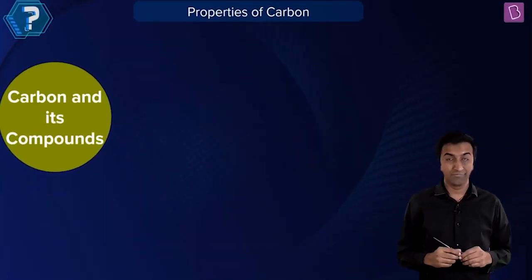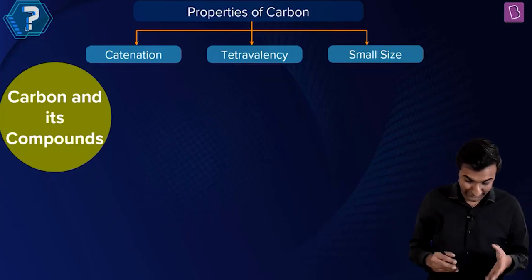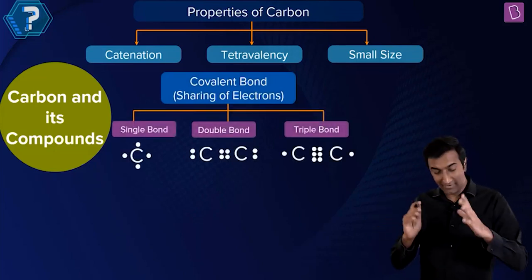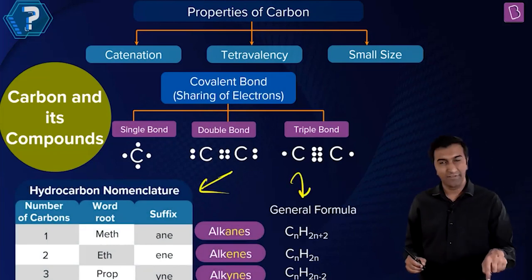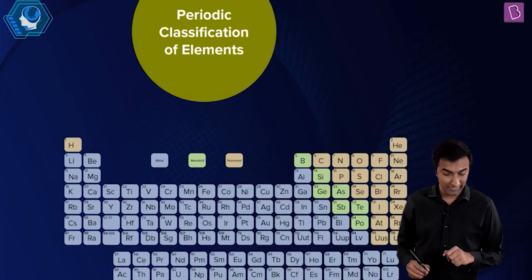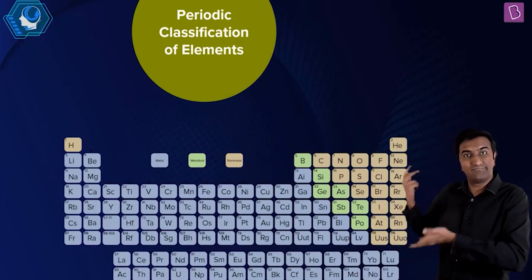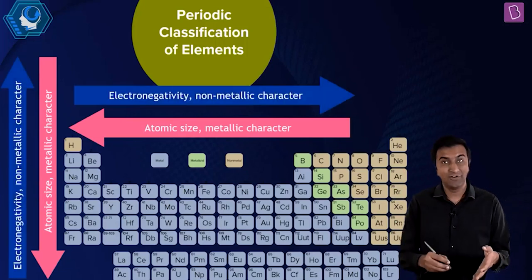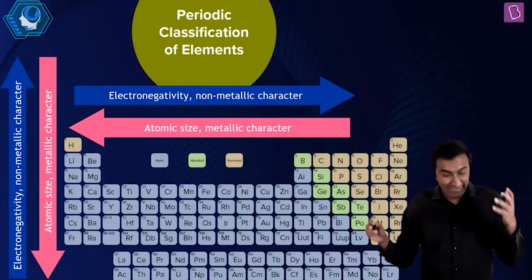Carbon and its compounds: in grades 11 and 12 you have an entire branch of organic chemistry, but a lot of this was deleted in the current year. The central idea is that carbon forms covalent compounds — it bonds itself through catenation — and you've got nomenclature and the different families of hydrocarbons. Periodic classification of elements: this is how chemistry evolved over about 200 years. You can revise the entire chapter using one figure of the periodic table — electronegativity, atomic size, so many trends just in that one figure.